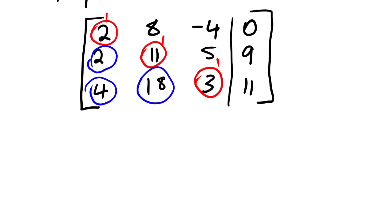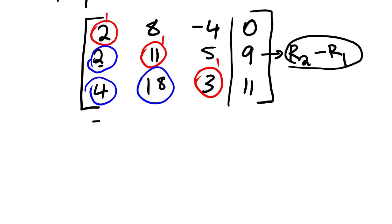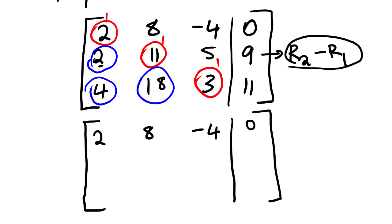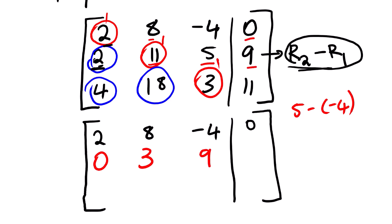First we focus on row number 2. We need to make the first element 0. We take row 2 minus row 1, and this operation takes place on row number 2, so row number 1 stays the same. So 2 minus 2 gives us 0. Then 11 minus 8 gives us 3. Then 5 minus negative 4 gives us 9. And 9 minus 0 gives us 9.